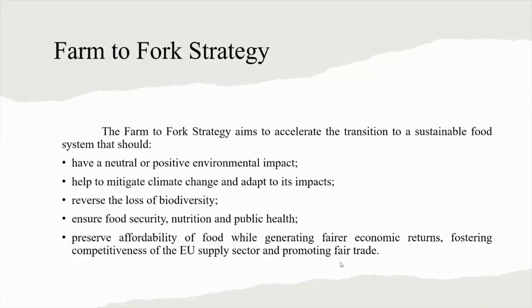The Farm to Fork Strategy aims to accelerate the transition to a sustainable food system that should have a neutral or positive environmental impact, help to mitigate climate change and adapt to its impacts, reverse the loss of biodiversity, ensure food security, nutrition and public health, making sure that everyone has access to sufficient, safe, nutritious and sustainable food, preserve affordability of food while generating fairer economic returns, fostering competitiveness of the EU supply sector and promoting fair trade.